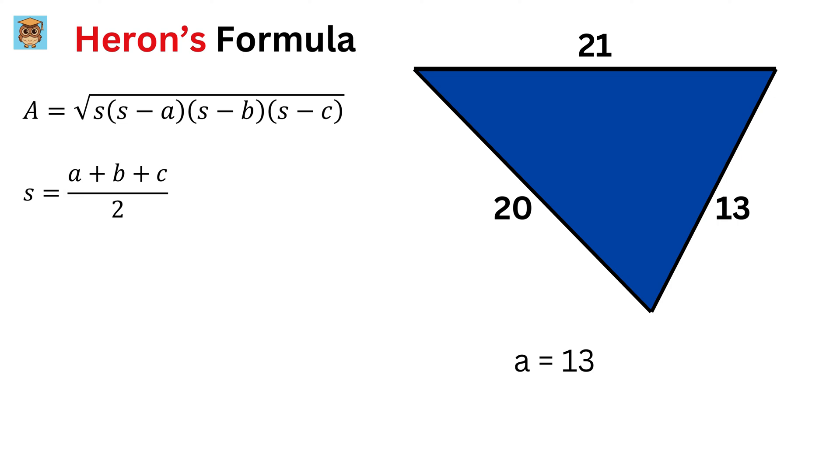Let A equals 13, B equals 20, and C equals 21. Then, substitute them here to get the semi-perimeter, or S, as 13 plus 20 plus 21 over 2 or 27 units.